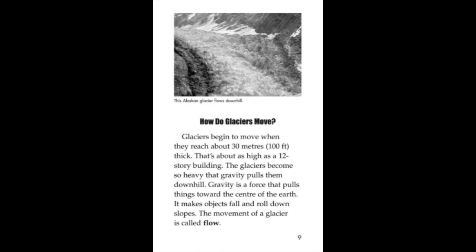Glaciers begin to move when they reach about 30 meters or 100 feet thick. That's about as high as a 12-story building. The glaciers become so heavy that gravity pulls them downhill. Gravity is a force that pulls things toward the center of the earth. It makes objects fall and roll down slopes. The movement of a glacier is called flow.